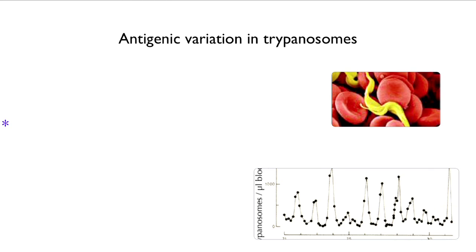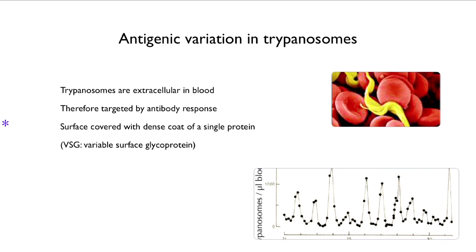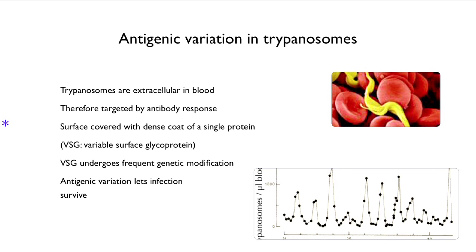There is antigenic variation in many trypanosomes. They live extracellularly in the blood — they don't hide inside cells like malaria — so they are targeted by the antibody response. They have a surface covered with a dense coat of a single protein called VSG, Variable Surface Glycoprotein, which undergoes frequent genetic modification. This antigenic variation is what lets the infection survive. The concentration of trypanosomes in the blood of someone with sleeping sickness goes up and crashes repeatedly, and this pattern is a direct result of the antigenic variation mechanism.